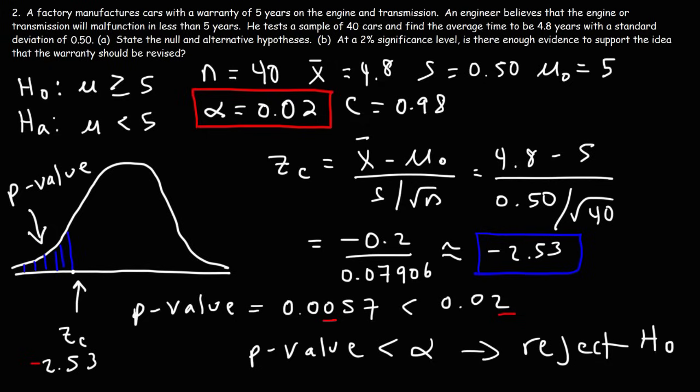At a 2% significance level — or with 98% confidence — there is enough evidence to support the idea that the warranty should be revised. Now you know how to use the p-value method to determine whether to reject or fail to reject the null hypothesis. Thanks for watching, and don't forget to subscribe.